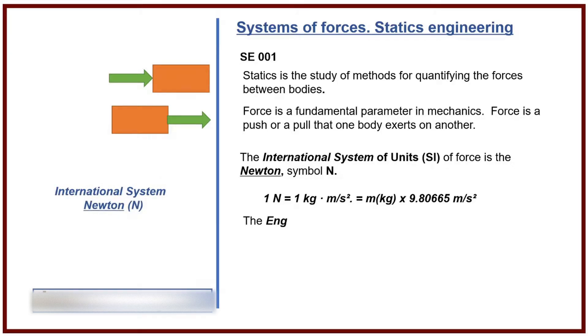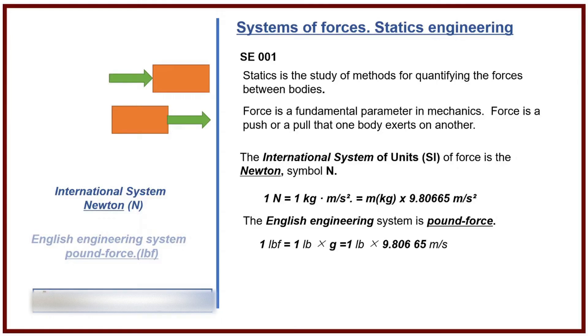The English engineering system is the pound force. 1 pound force equals 1 pound times G, equals 1 pound times 9.806 meters per second squared, equals 0.453 kilograms times 9.806 meters per second squared, equals 4.448 newtons.